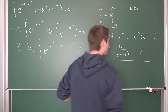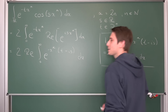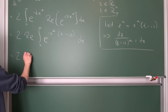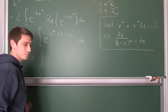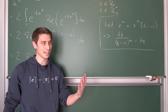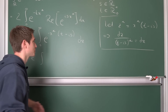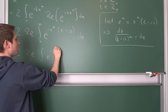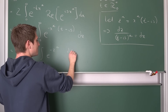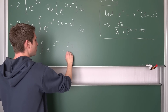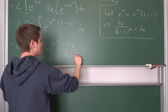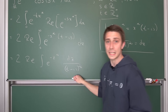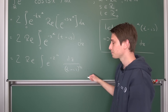We can plug everything in and see what we get. This is two times the real part of some integral — e to the negative z to the alpha, times d z over (t minus i·s) to the one over alpha. And here is where the real fun comes in.